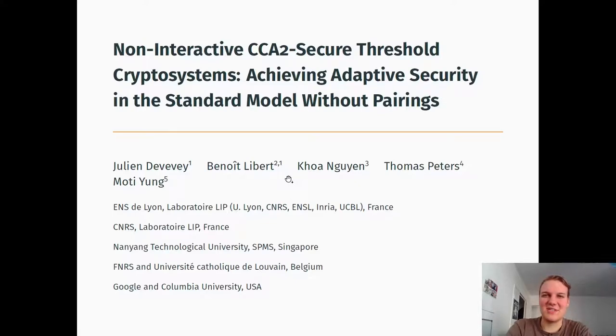Hello, and thank you for clicking on this video, where I will try to explain in the next 20 to 25 minutes how to achieve CCA2 security under adaptive corruptions in the standard model without pairings in the case of non-interactive threshold cryptography. This is a joint work with Benoit Libert, Cohen, Guyen, Thomas Peters, and Mottie Young.